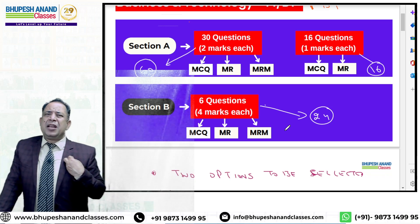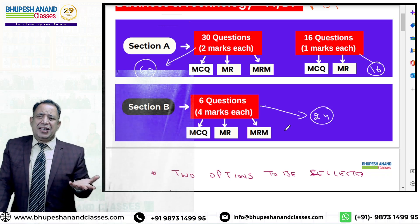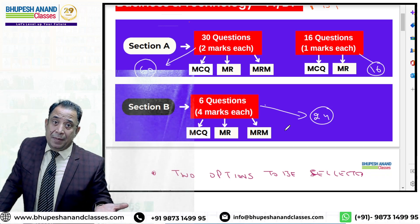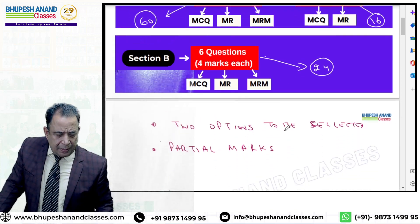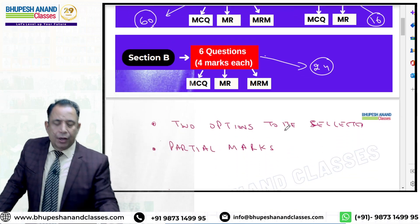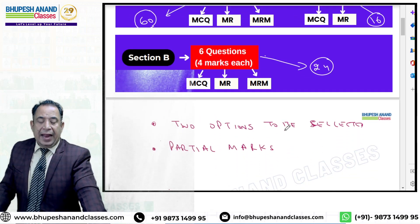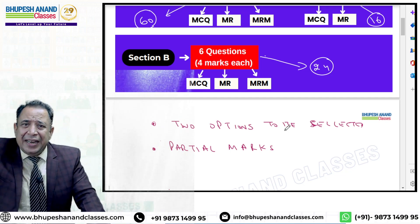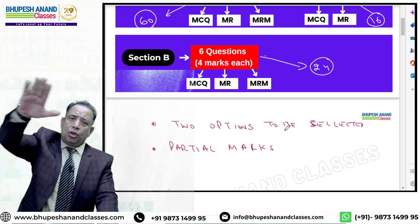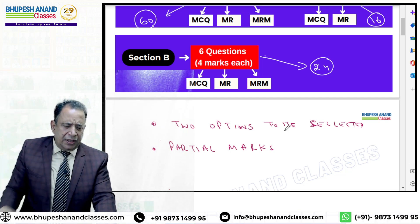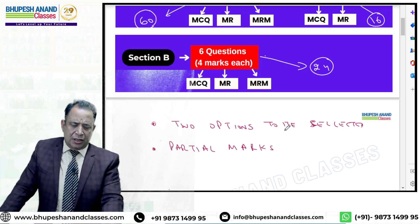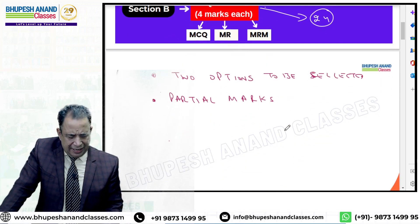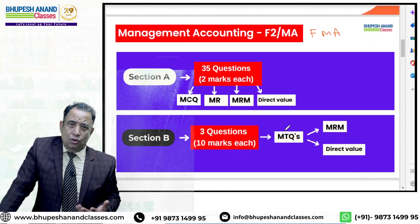मैंने अपने आप से नहीं बताया - यह ACC की website कह रही है। I am giving you updated material. Section B को देखें तो 6 questions आएंगे, and one question will be of four marks. मैं BT - business and technology - की बात कर रहा हूं। उसमें 3 तरह के questions हो सकते हैं: MCQs, MR, and MRMs।